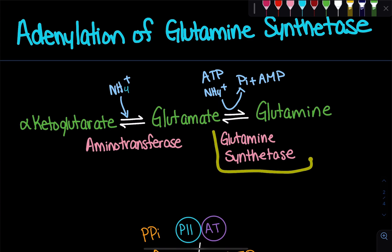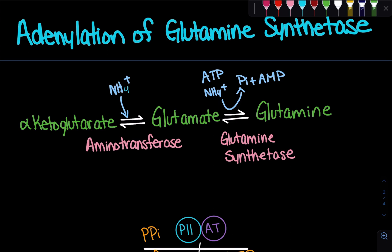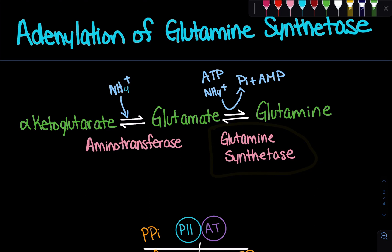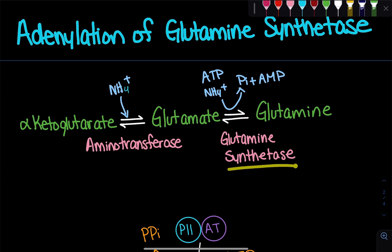This enzyme can be regulated because glutamine can actually be used to create other biological molecules — it can be utilized to create carbamoyl phosphate, histidine, tryptophan, AMP, or CTP. Since it can go on to result in the production of so many other biological molecules, this enzyme needs to be regulated, because sometimes we may need a lot of glutamine or only a little bit.